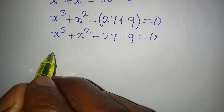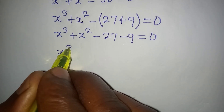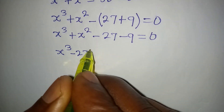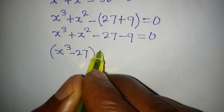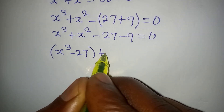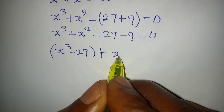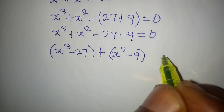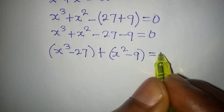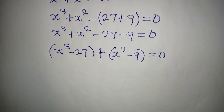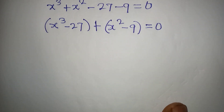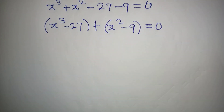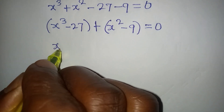At this point we can group and factorize. From x to the power of 3 minus 27 will come together, and then plus x to the power of 2 minus 9 will come together. This is now equal to 0. Remember that we can write 27 in index form.